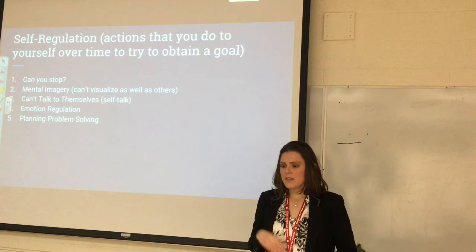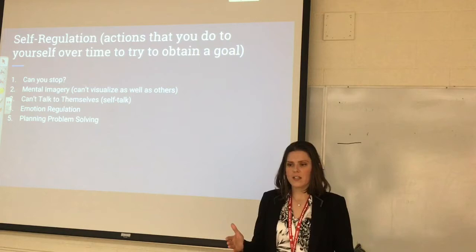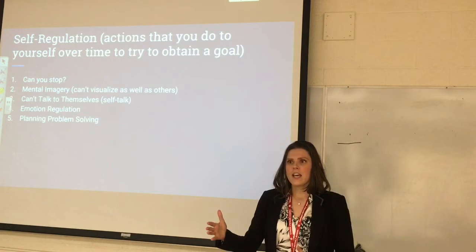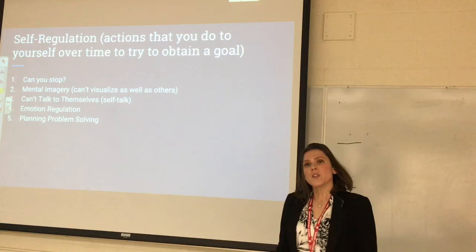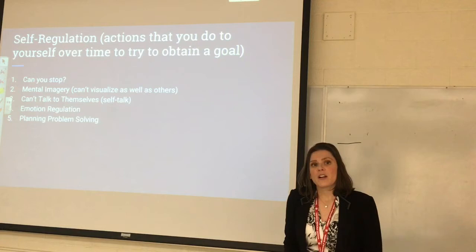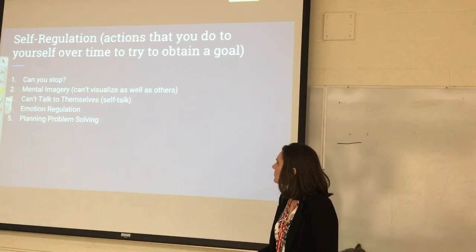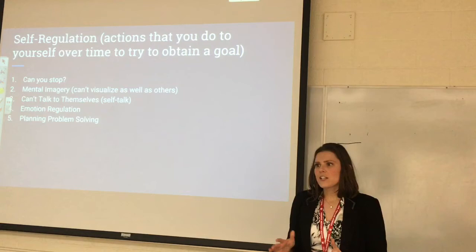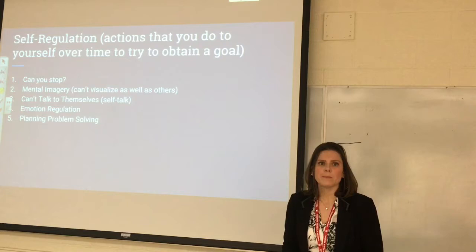Next is emotion regulation. Because they can't picture their future emotion, motivation becomes difficult — they can't picture that future feeling that drives action. This also connects to inhibition: if they're feeling a very strong emotion, they're not as flexible. And then later in childhood, planning and problem-solving deficits really show up.